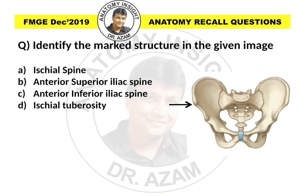The image given here is a hip bone, and we all know that the hip bone has three parts. The upper part is the ileum, the part below is the ischium, and the part meeting in the front is the pubis. Now, the ileum has got two spines anteriorly — one above and one below.